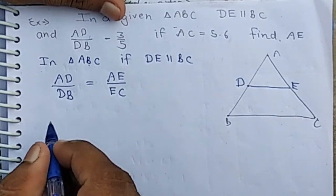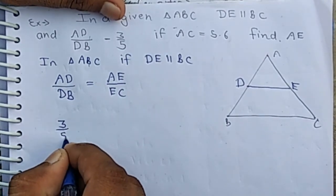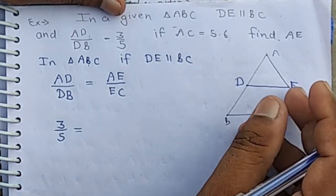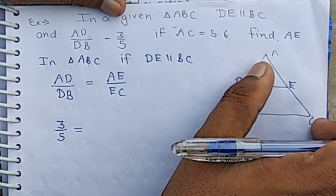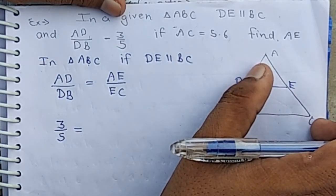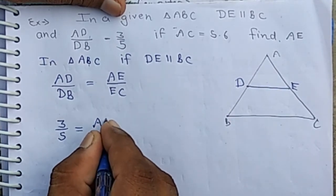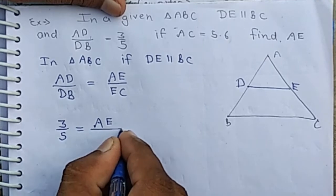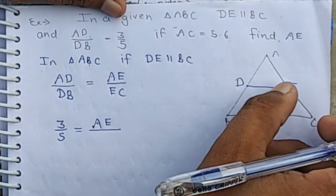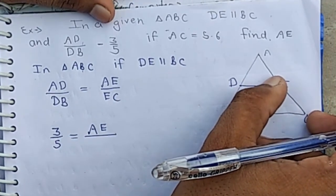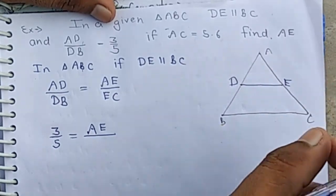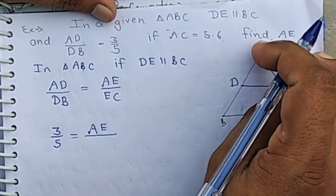AD by DB is given, and since the value of AC is given, we have to find AE. We can write EC as AC minus AE.